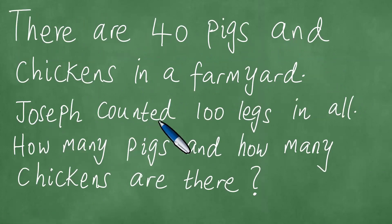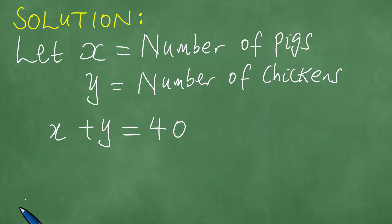Moreover, Joseph counted 100 legs in all. If Joseph counted 100 legs, we know that each pig has four legs, so we have 4X. Each chicken has two legs, so we have 4X plus 2Y equals 100.